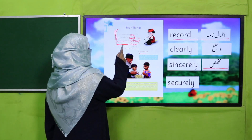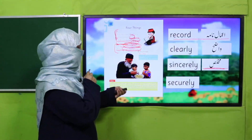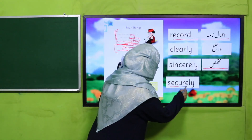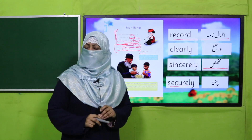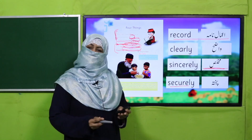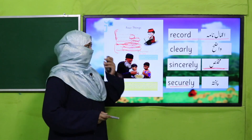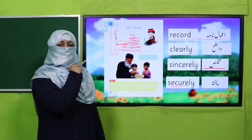The poem continues: 'To act for honest motives purely, to trust in God and heaven securely.' This means whatever good deed you do, help others with it, and our belief in Allah and the Day of Judgment — in paradise — should be firm and secure. These are the four things taught in this poem.